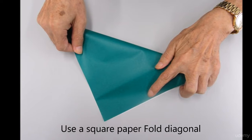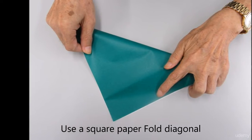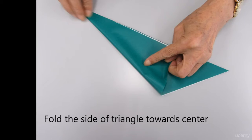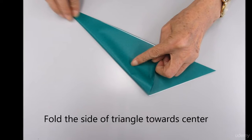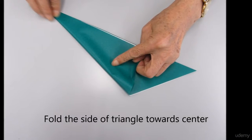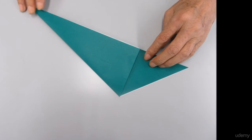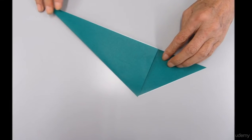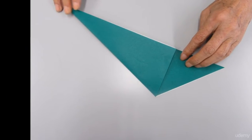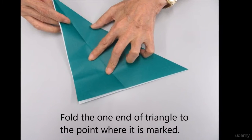Use square paper to fold diagonal and side, a big triangle, long triangle. Why folding like this is to mark the line.